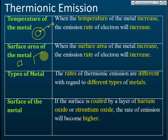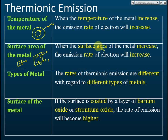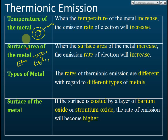For surface area: if we have two pieces of metal, one small and one big, the bigger one can release more electrons when heated. A bigger surface area means more electrons can be emitted. And for type of metal — as explained with lithium and sodium — sodium can release electrons easier because the attraction force between the valence electron and the nucleus is weaker.